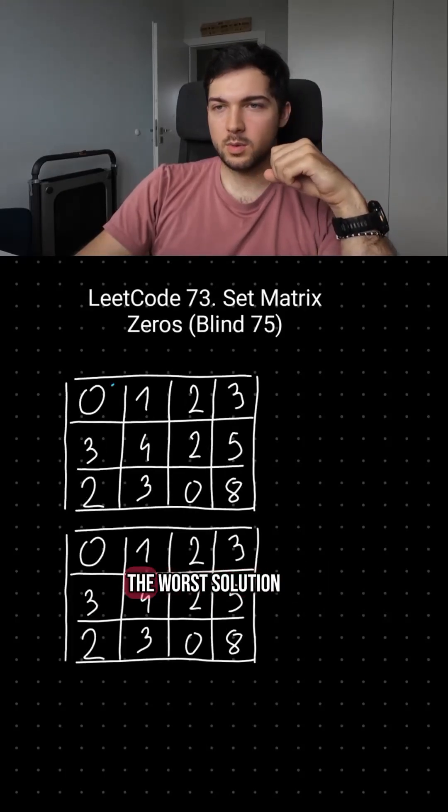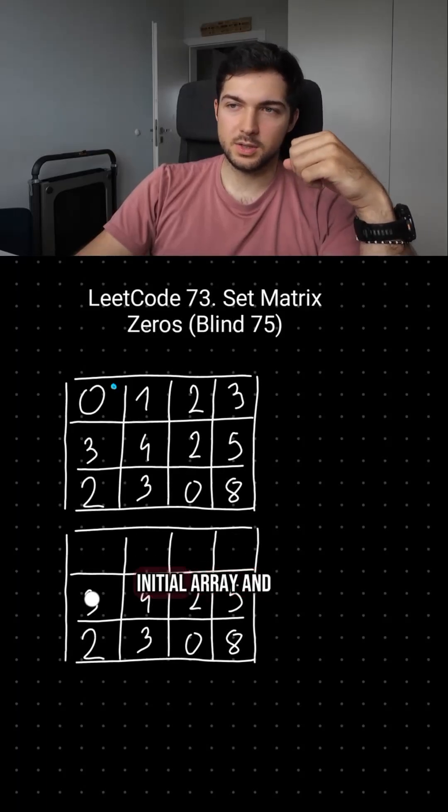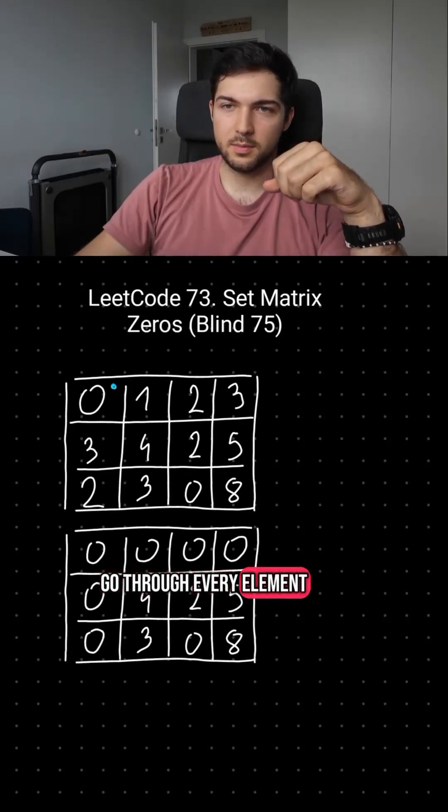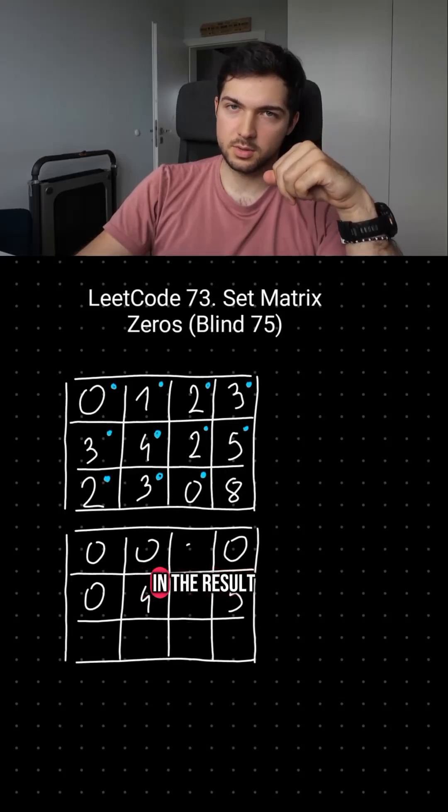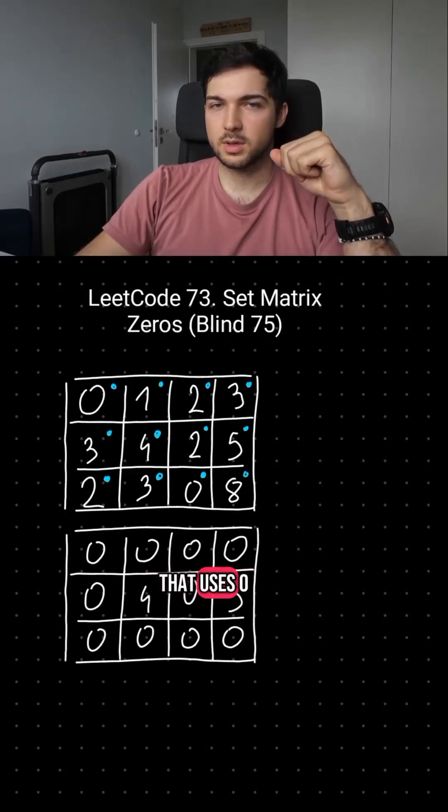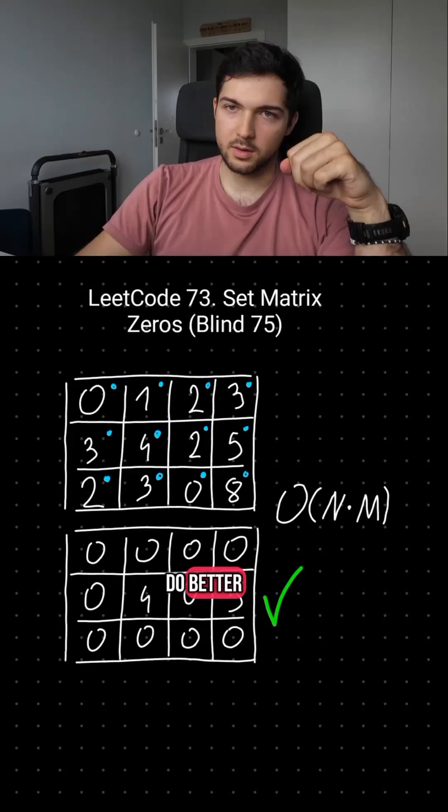Let's start with the worst solution. Let's copy the initial array and go through every element. If it's a zero, then we zero the corresponding row and column in the result. That uses O of n times m memory, but we can do better.